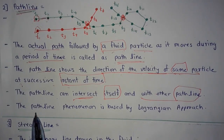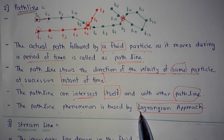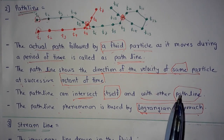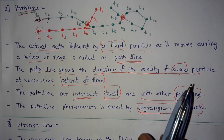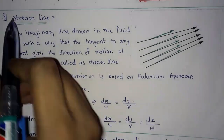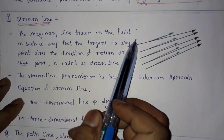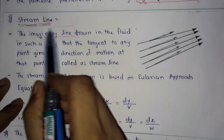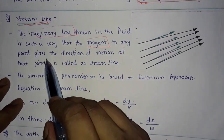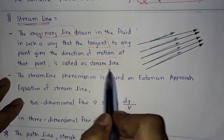Path line phenomenon is based on the Lagrangian approach, which means it is based on and about individual fluid particles. Next is streamline — the imaginary line drawn in the fluid in such a way that the tangent at any point gives the direction of motion at that point is called a streamline.